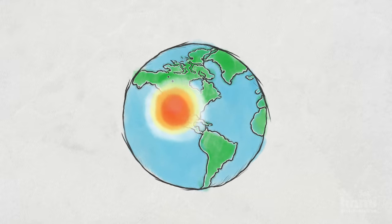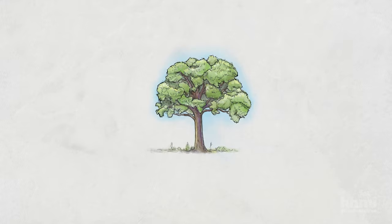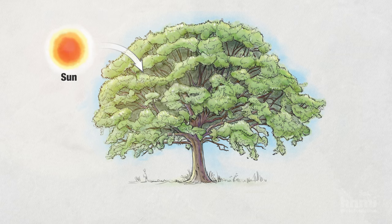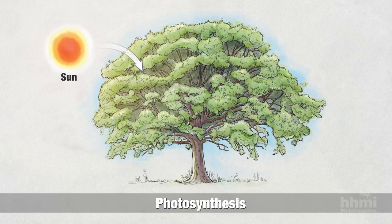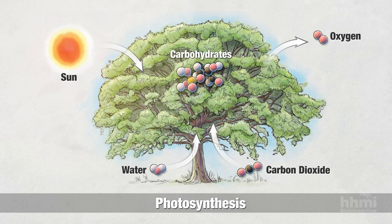Almost all life on Earth is solar powered. Plants, algae, and some bacteria capture light energy from the sun and convert it to chemical energy in a series of reactions called photosynthesis. These organisms produce carbohydrates from simple building blocks like water and carbon dioxide from the environment, and in the process they release oxygen. Photosynthesis nourishes almost the entire living world.